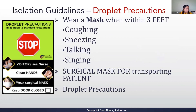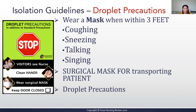Now for isolation guidelines, starting with droplet precautions. Droplet precautions are in addition to standard precautions. Hands must be washed, visitors need to see the nurse, and you must wear a mask. If a patient is on droplet precautions, the door should be closed. You wear your mask within three feet, because the patient can expel those organisms when they cough, sneeze, or talk. The patient should also be transported with a mask on so they don't expel those organisms.